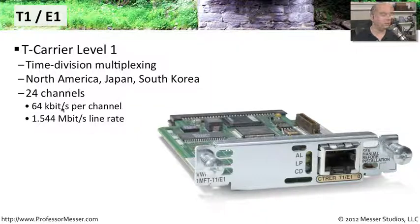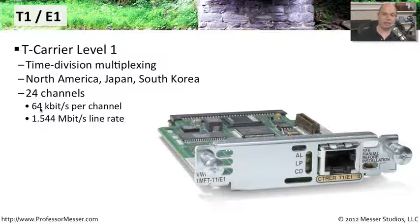Those 24 channels, if you do the math, come out to be about 64 kilobits per channel. There's a lot of traffic going on inside of it, but you can think of it as these 24 separate channels inside of it.